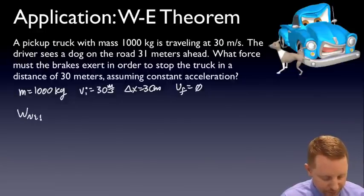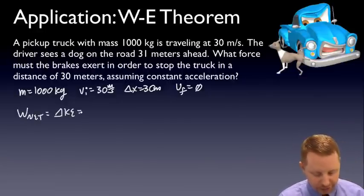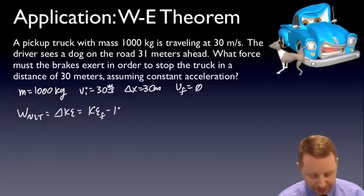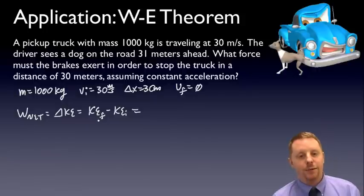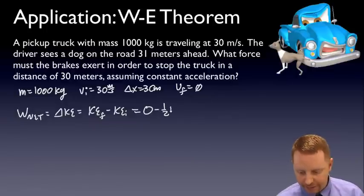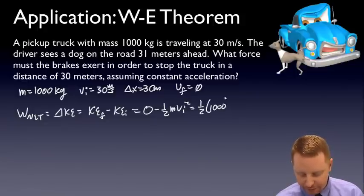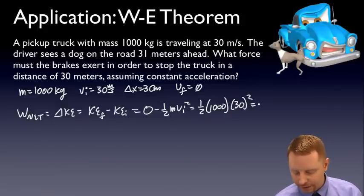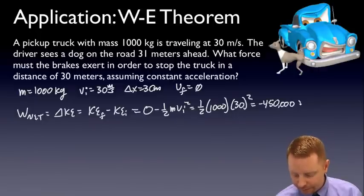Let's go back to the work energy theorem. The net work done is going to be equal to the change in kinetic energy, or kinetic energy final minus kinetic energy initial. If the object is stopped and we're all done, its final kinetic energy must be zero. Its initial kinetic energy we can get is one-half m v initial squared, or one-half times 1000 kilograms times our initial velocity 30 meters per second squared, which gives us negative 450,000 joules.